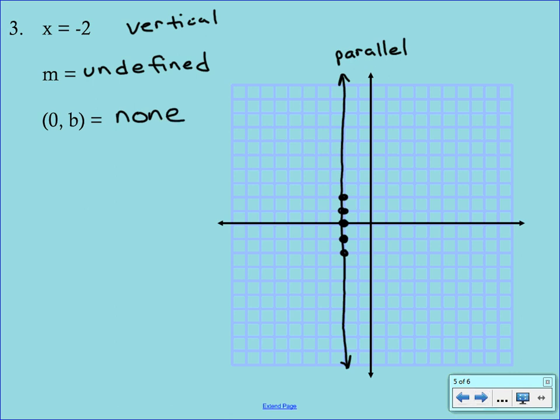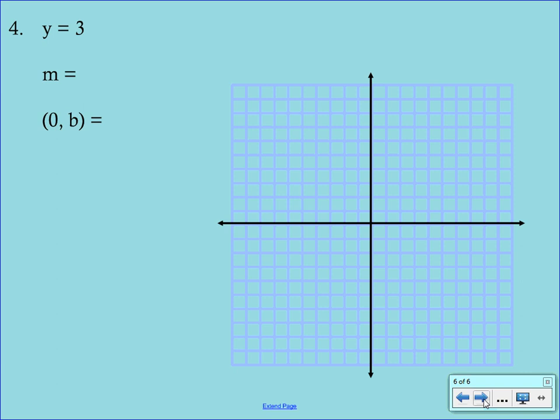Our last example is also a different type of equation. This would fall into the category of a horizontal line, where the equation is y equals b. We know that the slope of a horizontal line is zero. So we can fill that in right away. And again, I think to get the y-intercept, let's actually start graphing the line here and see where it crosses.